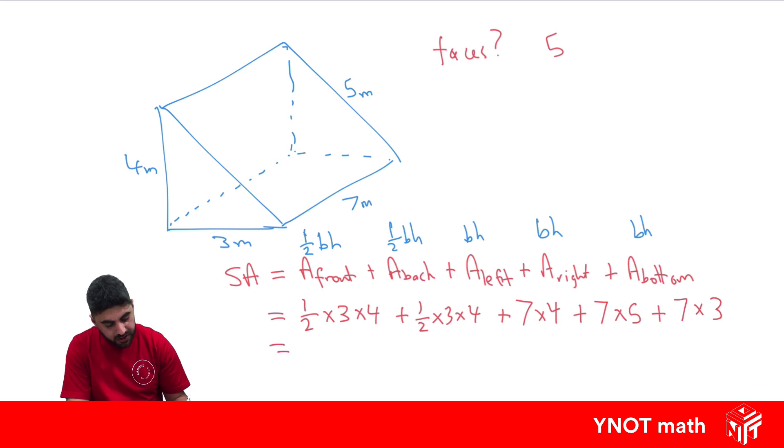Putting this all together, 3×4 is 12, and half of that is 6. Same for this one. 7×4 is 28, 7×5 is 35, and 7×3 is 21. Adding that all together gives us 96 meters squared for the total surface area.